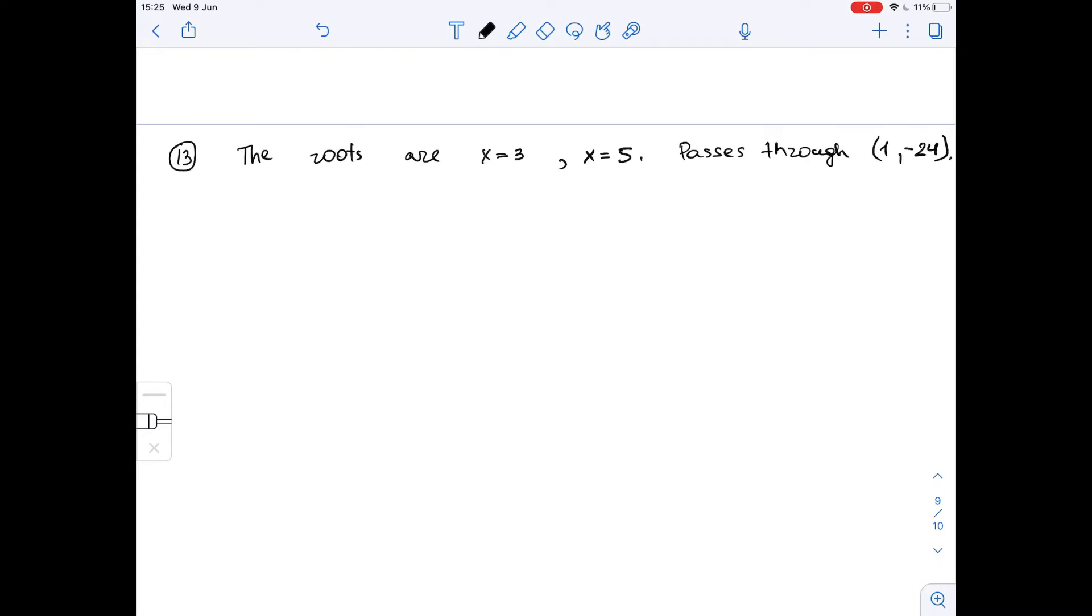Similarly, if these are the roots, that means that (x minus 3) and (x minus 5) are the factors of our function. So f of x is equal to some coefficient a times (x minus 3) times (x minus 5).